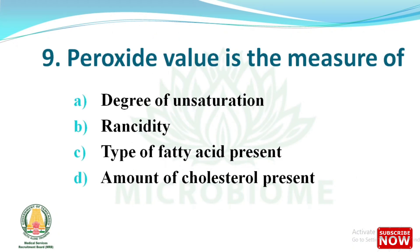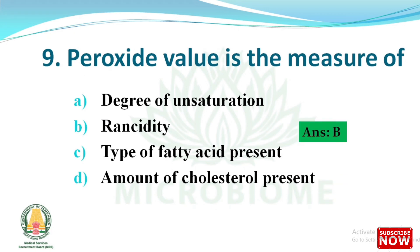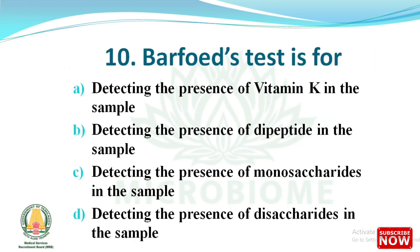Next question: peroxide value is the measure of which of the following? The options are degree of unsaturation, rancidity, type of fatty acid present, amount of cholesterol present. The right answer is option B, rancidity. Next question: Barfoed's test is for detecting the presence of which of the following in a sample? The right answer is option C, detecting the presence of monosaccharides in the sample.